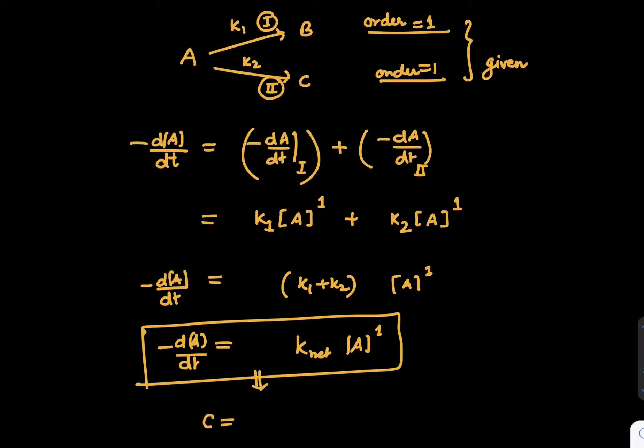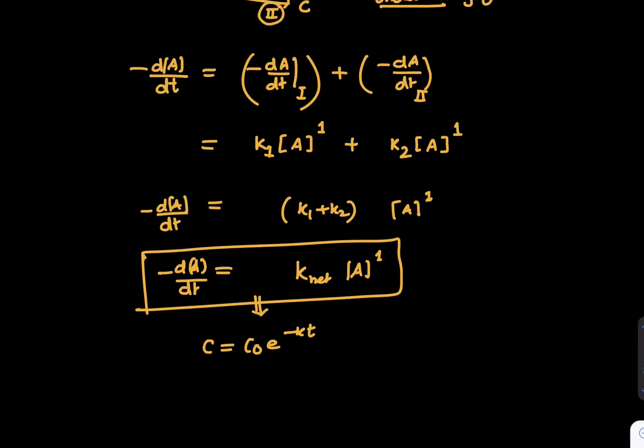What is the end result of this? This comes up as, remember, c equals c0 e power minus kt, where c0 is the initial concentration of A, c is the current concentration of A, or we can say A is equal to A0 e power minus kt. Only difference here is, in place of k, you have k_net.